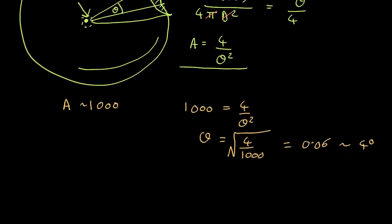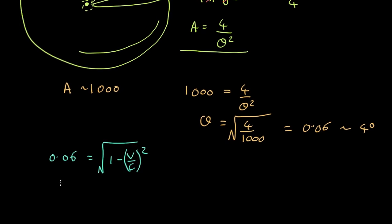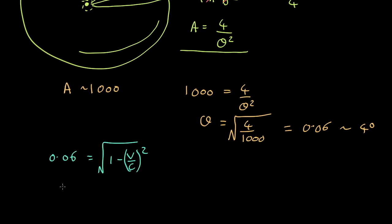What sort of speeds do you need to make it happen? So if you've got 0.06 equals root 1 minus v on c squared, square both sides, rearrange, and you can end up with v on c equals root 1 minus 0.06 squared, which is 0.998. So to get this to work, we have to have stuff coming out at 0.998 at the speed of light, very, very close to the speed of light.